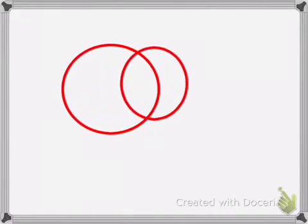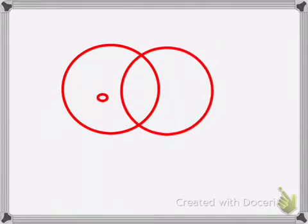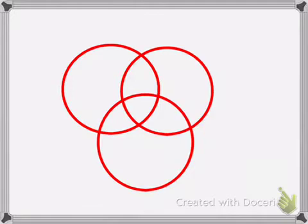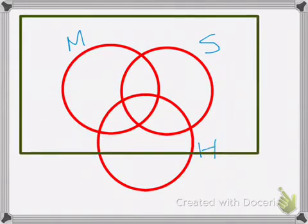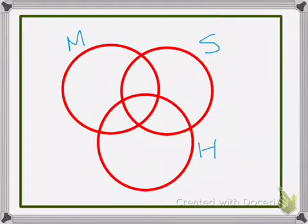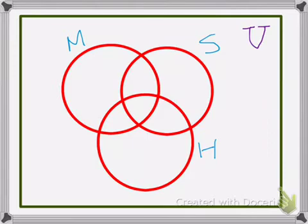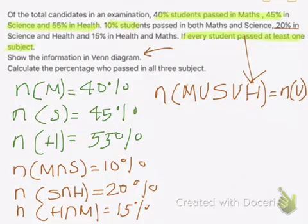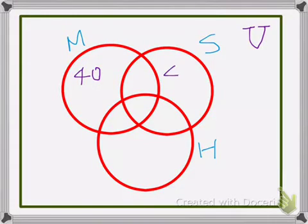Let me illustrate it in a Venn diagram. We draw three circles labeled M for math, S for science, and H for health. The universe, or the total, is our universal set, which I'll represent in purple color. This universal set includes our three sets M, S, and H. The percentage of students who passed in math is 40%, in science is 45%, and in health is 55%.